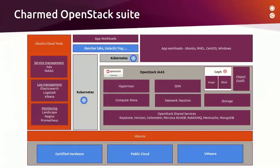In turn, when we take a look at the Charmed OpenStack Suite, it consists of the following components. Starting from the bottom, you can run Charmed OpenStack on top of certified hardware, in a public cloud, or on top of your VMware virtualization environment. We use Ubuntu as the operating system base. As depicted on the right, there is the Charmed OpenStack Infrastructure-as-a-Service cloud, consisting of compute, network, storage, and other OpenStack shared services.